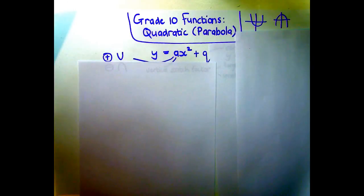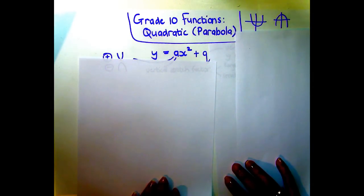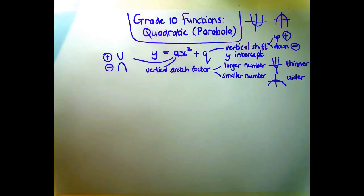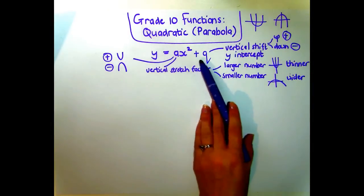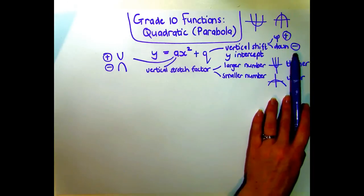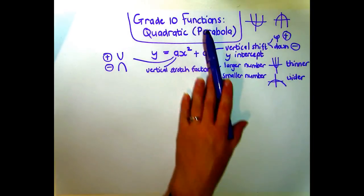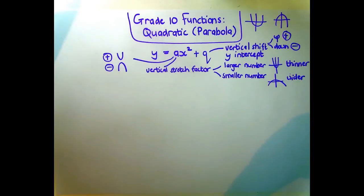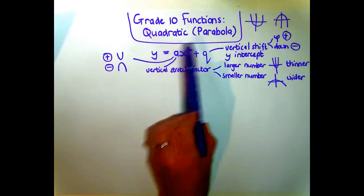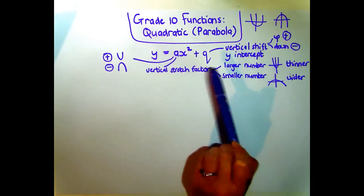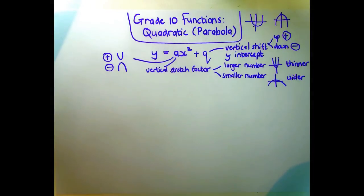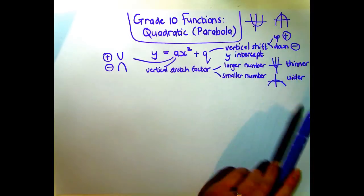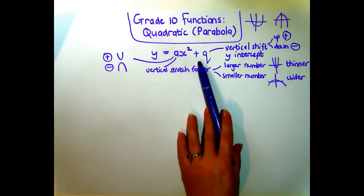The formula tells us how to draw the graph and has lots of information embedded in it. First, the q value tells us what the vertical shift is — shift up or down on the axes. A positive q value like +4 means a shift up; a negative value like -4 means a shift down. For quadratic expressions of the form ax² + q with no other values, q is also the y-intercept.